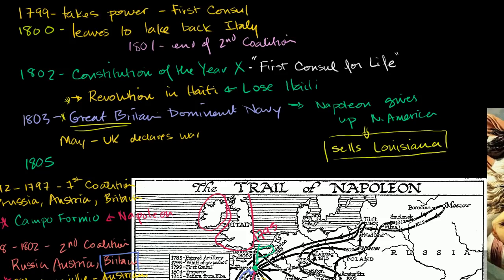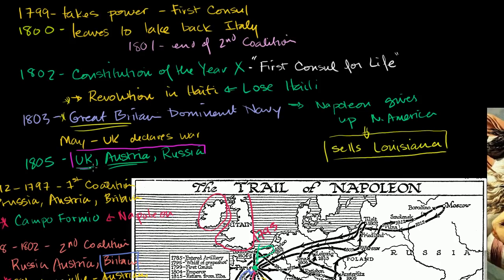Now Great Britain is joined by Austria and Russia. Austria had lost territory to France and especially to Napoleon in every coalition — they just want revenge. The United Kingdom controls the water and wants revenge. Russia doesn't like this upstart Napoleon. So they all jump in, forming the Third Coalition. There were other members, but these were the major powers.